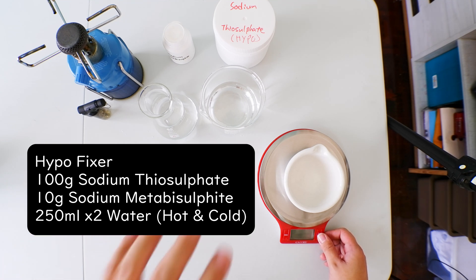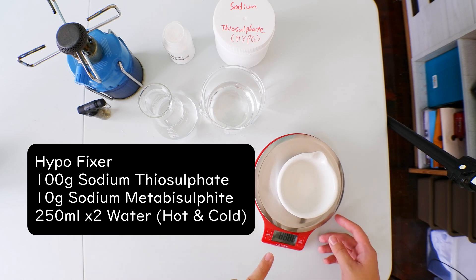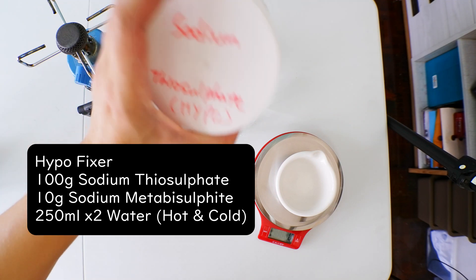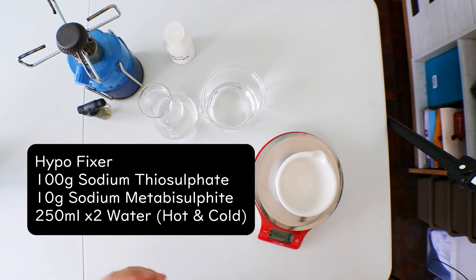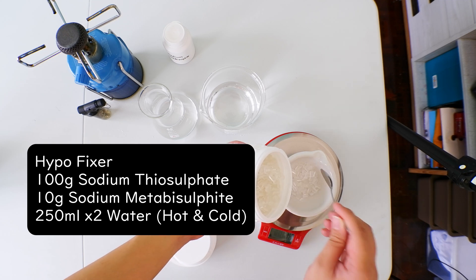You have to prepare 100 grams of sodium thiosulfate, 10 grams sodium metabisulfite, and 500 milliliters of water split in half. We'll start by measuring 100 grams of this.